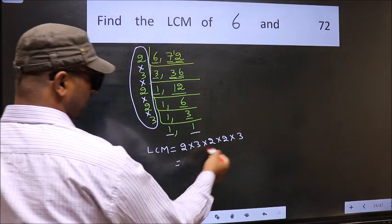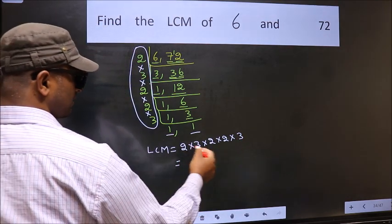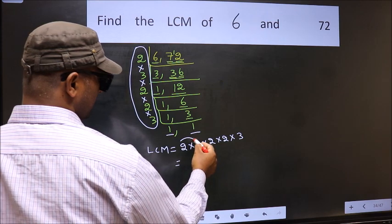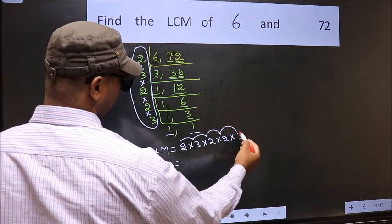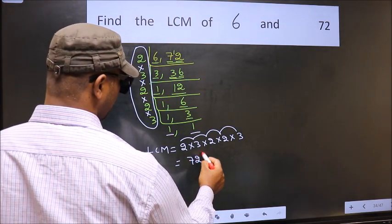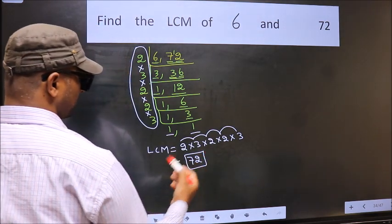Let us multiply these numbers. 2 × 3 = 6, 6 × 2 = 12, 12 × 2 = 24, 24 × 3 = 72. So 72 is our LCM.